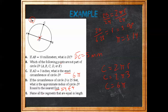Name all the segments that are equal in length. We know that all of the radii are equal, so we list all our radii: AD, BD, and CD. All three of those are equal to each other.